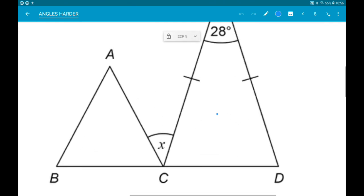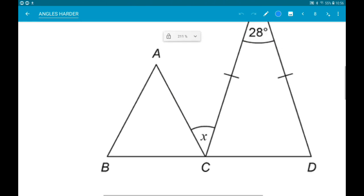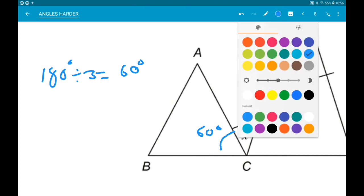So here BCD is a straight line. Now we know that triangle ABC is equilateral. So the size of one angle is 180 divided by 3 which is 60 degrees. So that angle is 60 degrees.